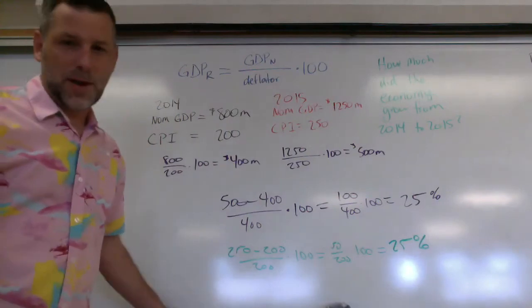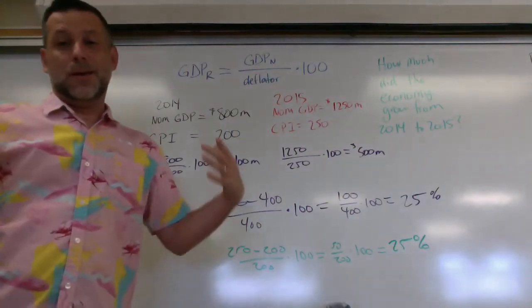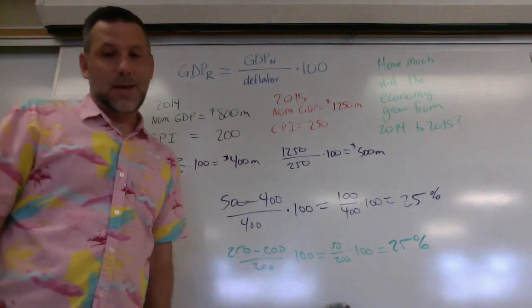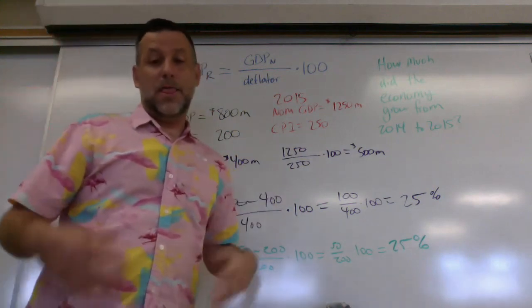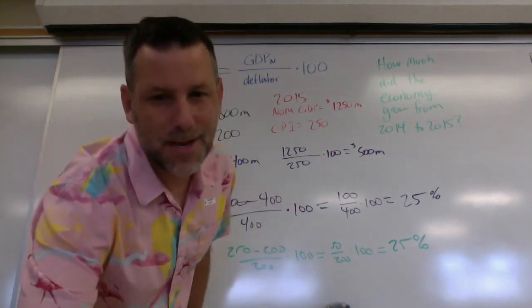So it turns out prices went up by 25%, production went up by 25%, and that's that. So that's real GDP. Take care.